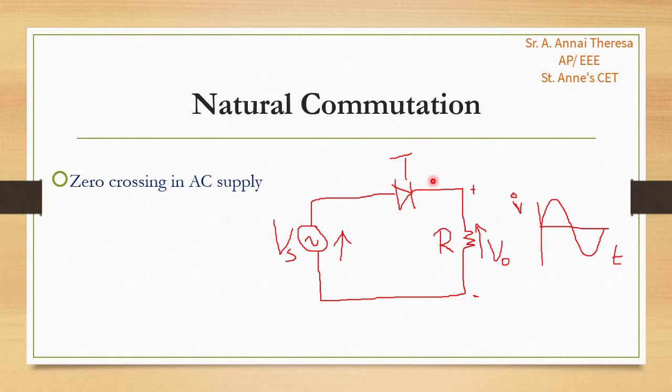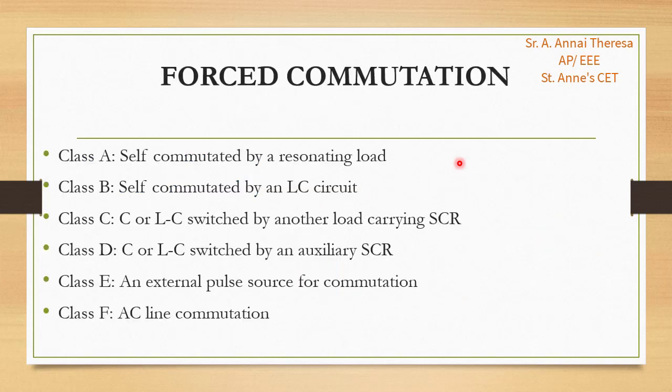Natural commutation can be observed in AC voltage controllers, phase controlled rectifiers, and cycloconverters. This is about natural commutation.